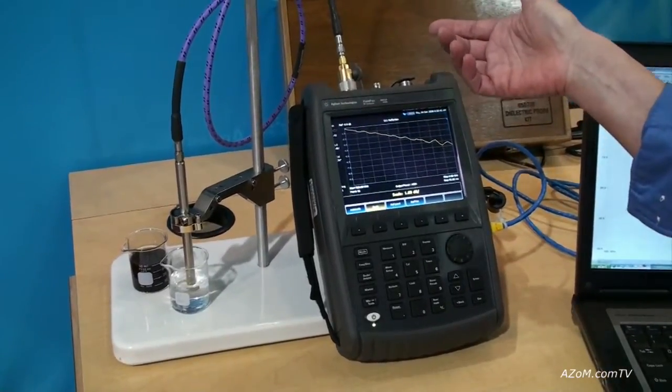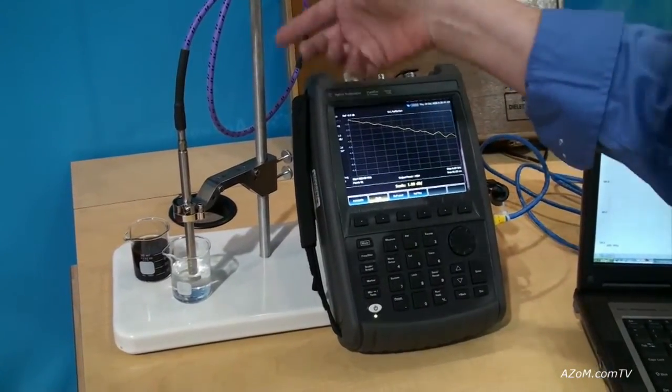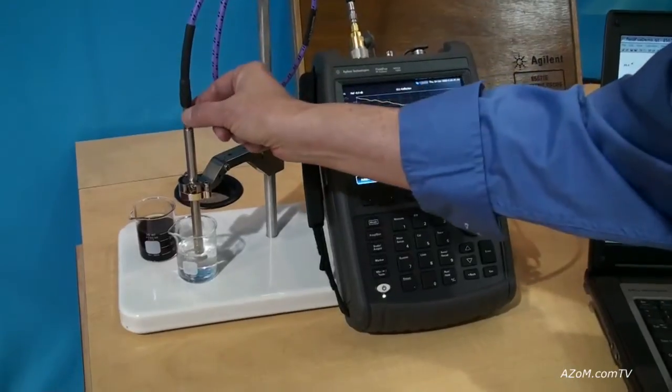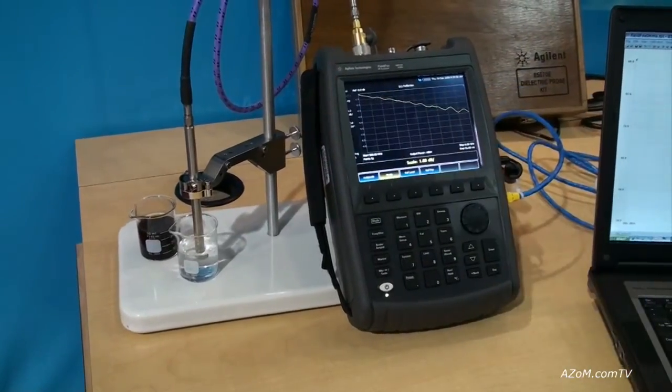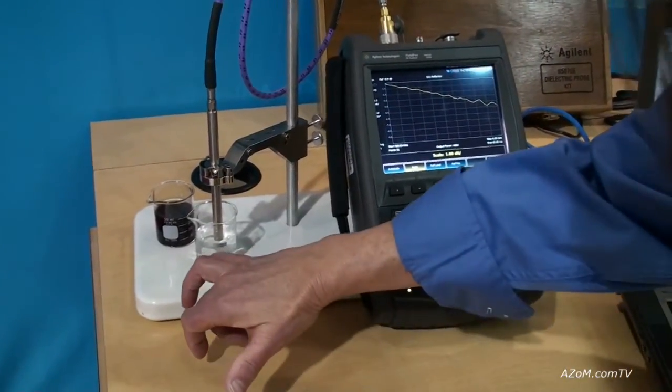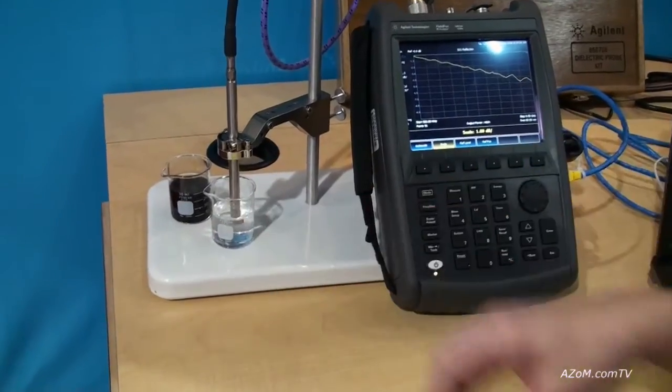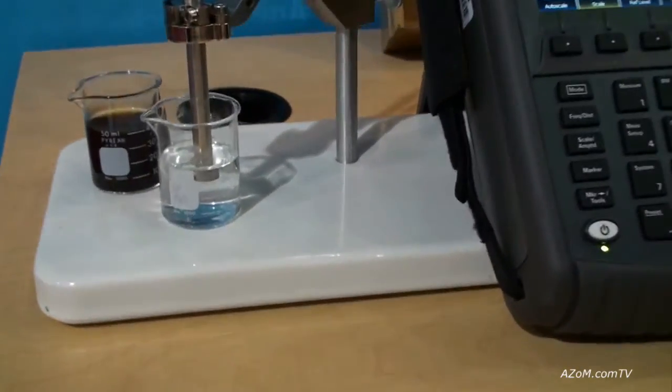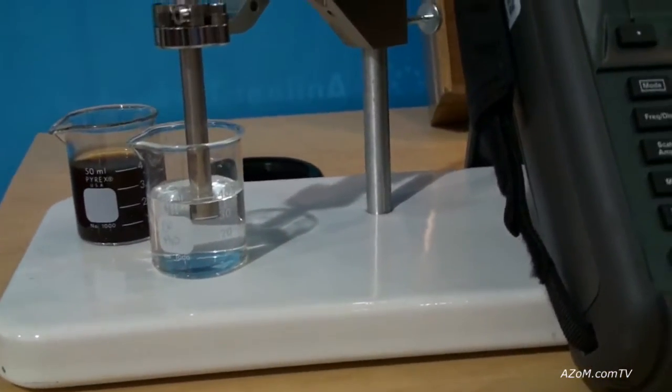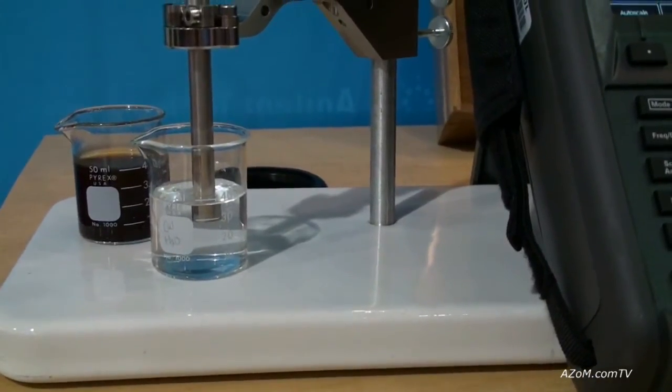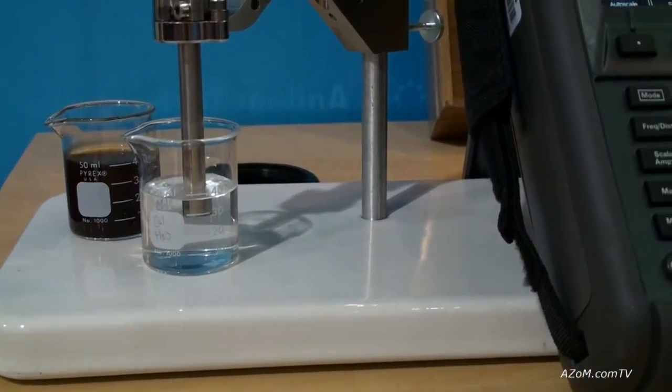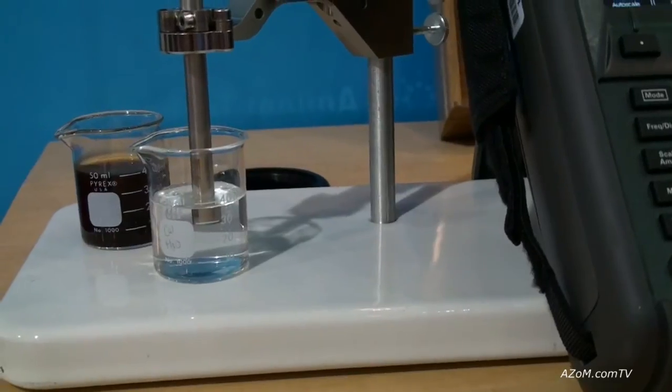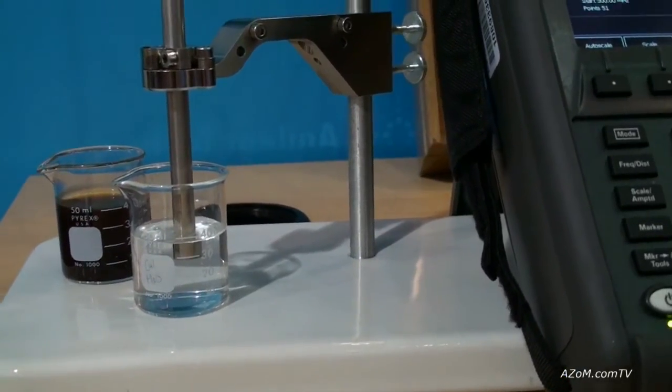We're measuring S11. Energy travels down through the cable into our open-ended coaxial probe, and at the tip of the probe, it's sealed with glass, but the field fringes out into the material, and how it reflects back is different depending on what you put the tip of the probe into.